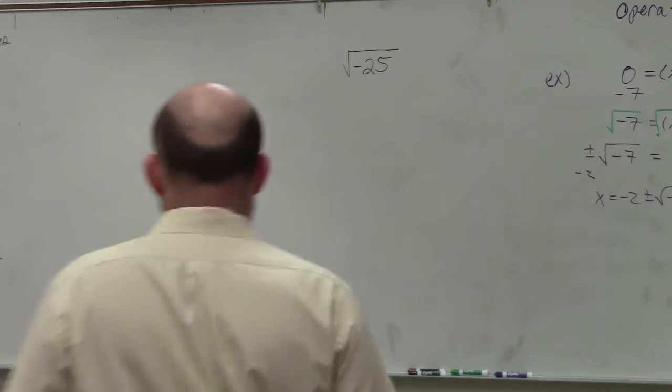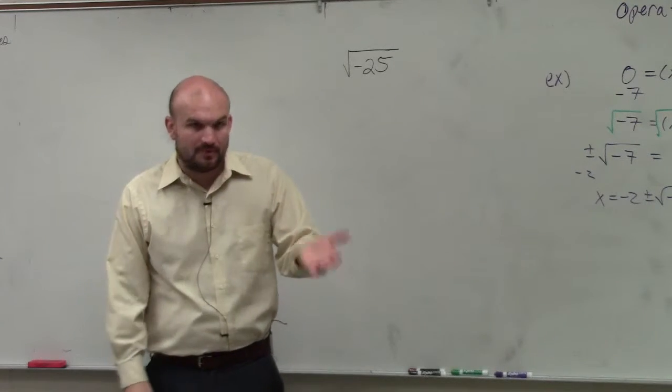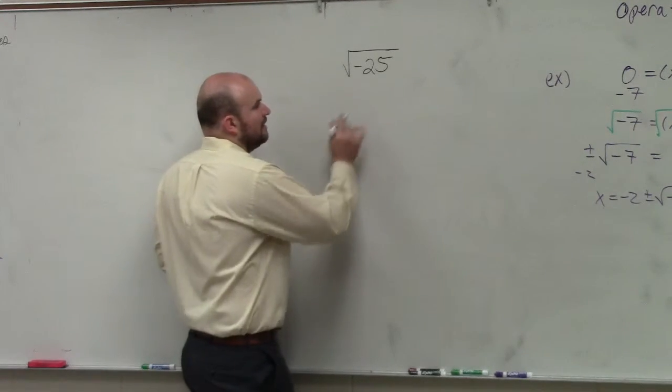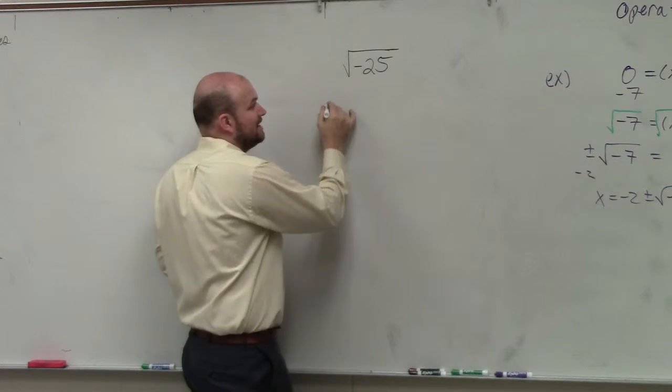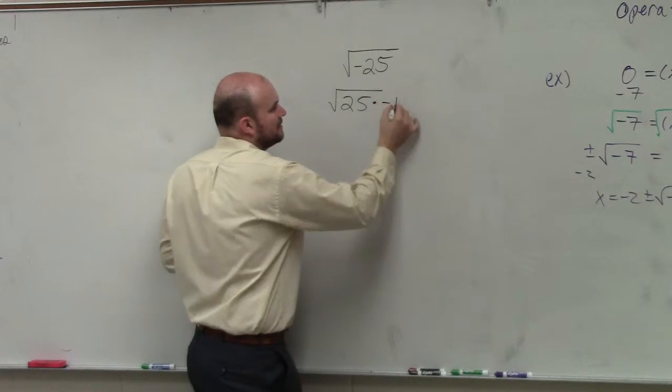And you end up getting a square root of a negative number. What can you do? Well, first of all, I want you guys to understand here. I can break up the square root of 25, or negative square root of 25. I can rewrite that as 25 times negative 1.